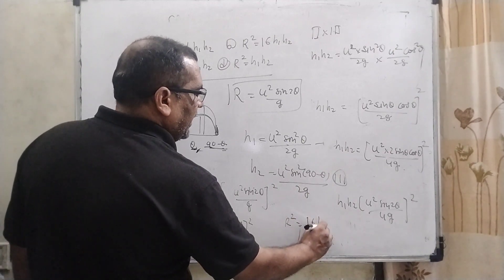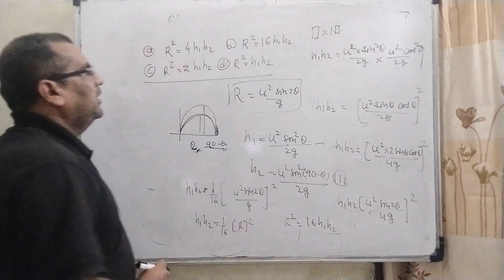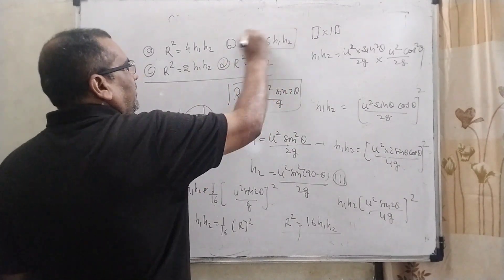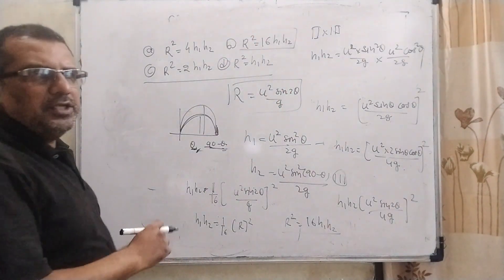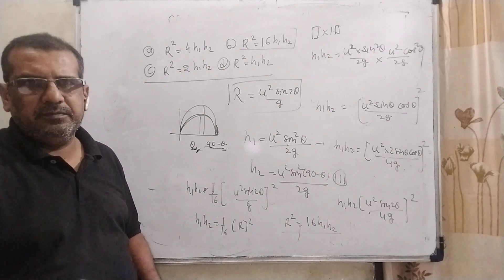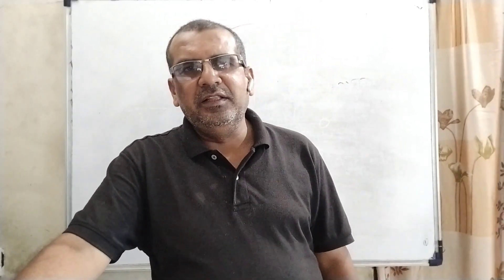Let's see which option is correct. Here option b r square equal to 16 h1 h2 is correct answer. I hope so you understood this question. Thank you for staying till the end of this video.